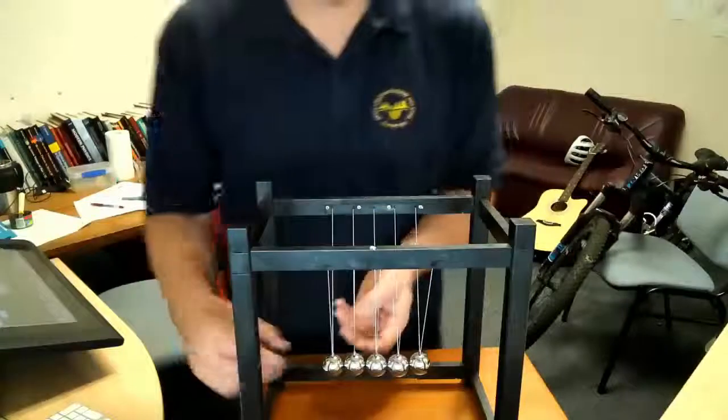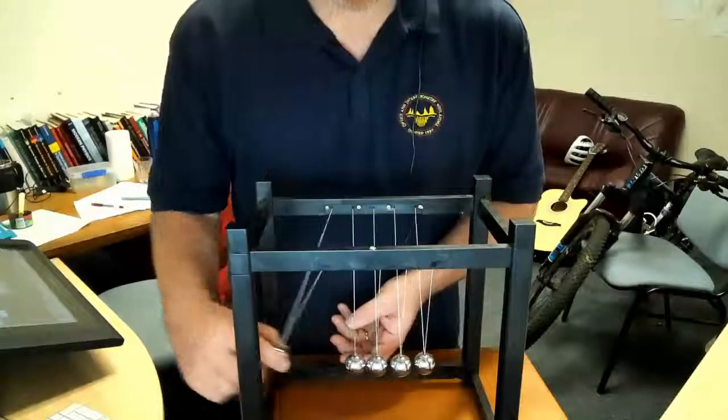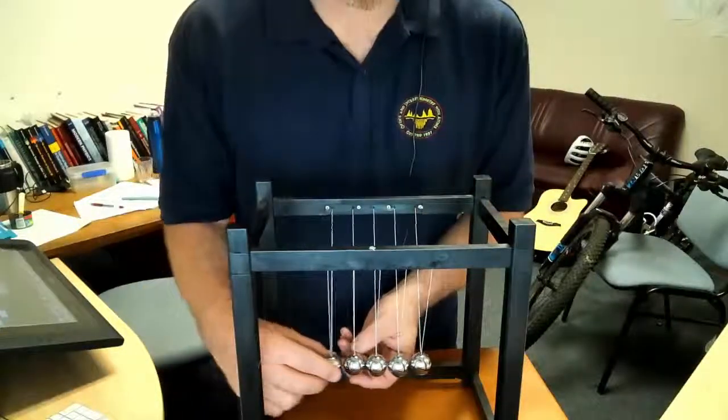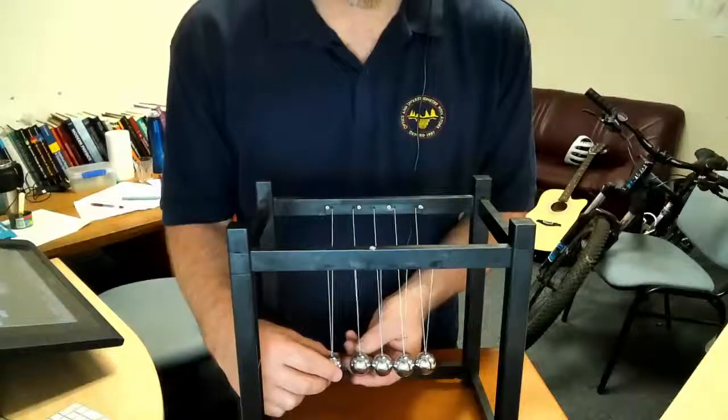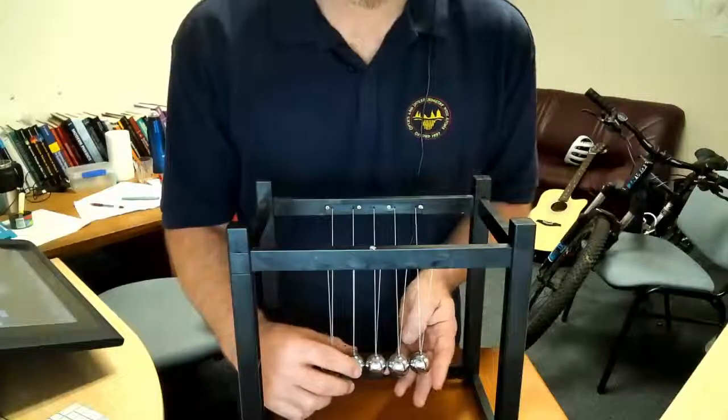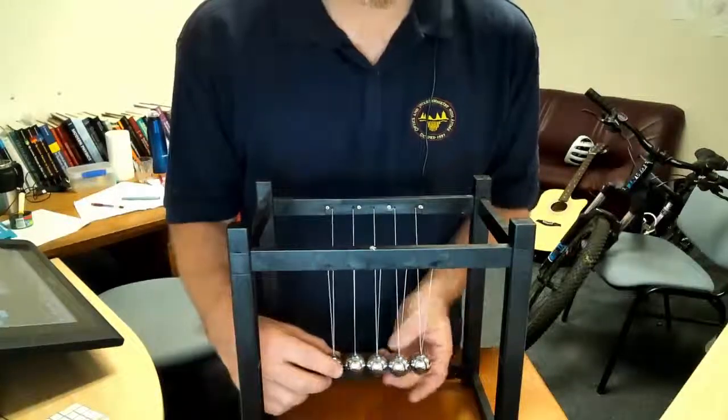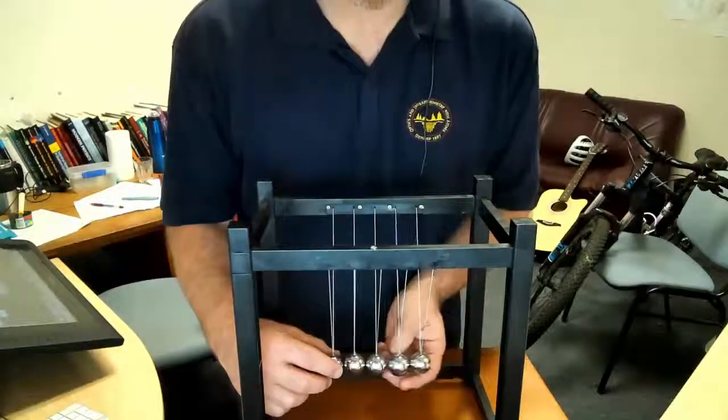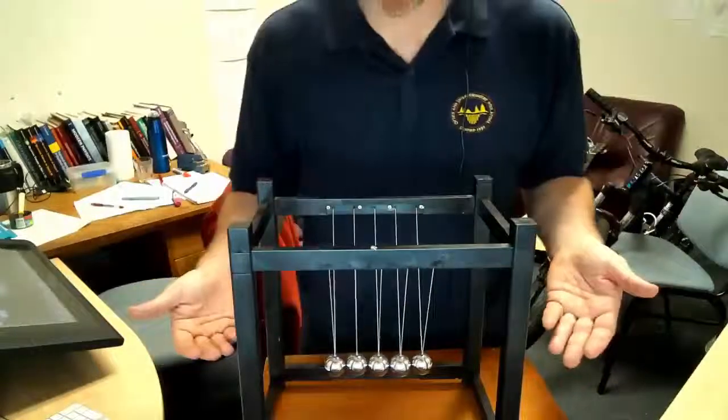If only momentum were conserved, there are many ways this could happen. One ball coming in could stop, and four could go at a quarter of the speed - that would conserve momentum. Or two could go at half the speed. There are many ways to conserve momentum in that collision.